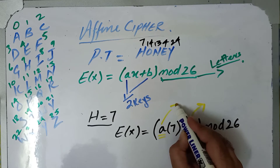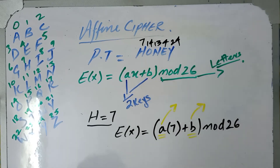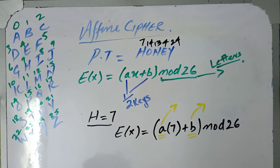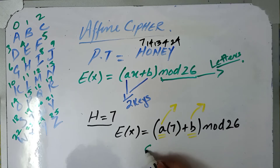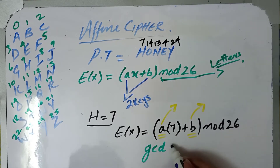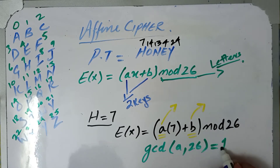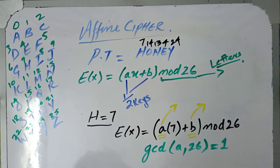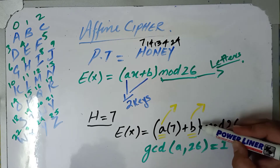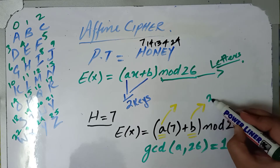a should be selected in such a way that if we take the greatest common divisor between a and 26, then the result should be 1 — that is, GCD(a, 26) = 1. Let's suppose we have selected the value for b as 3.